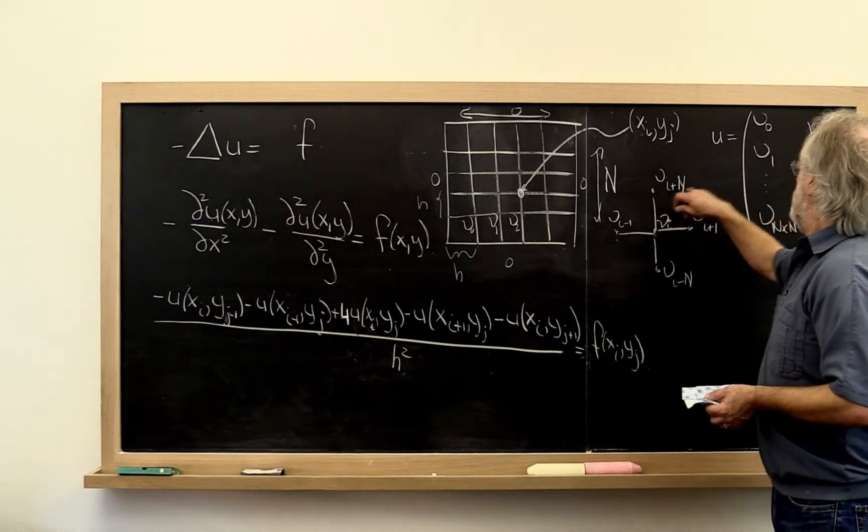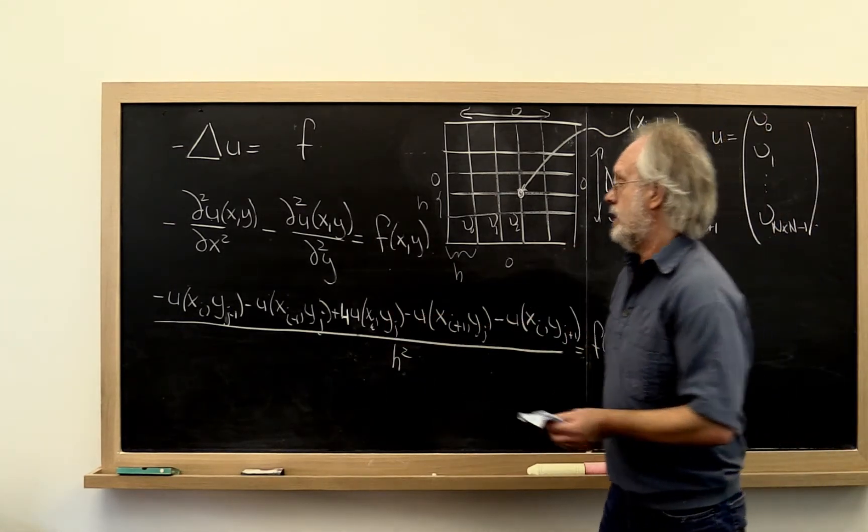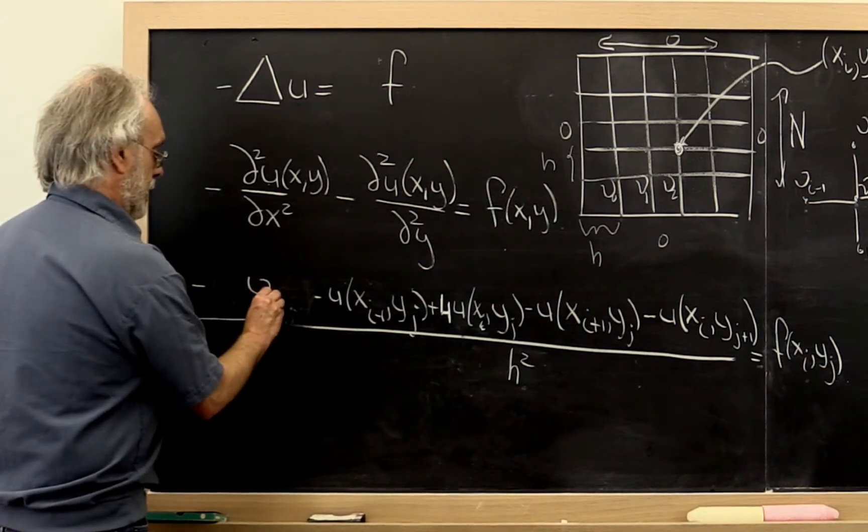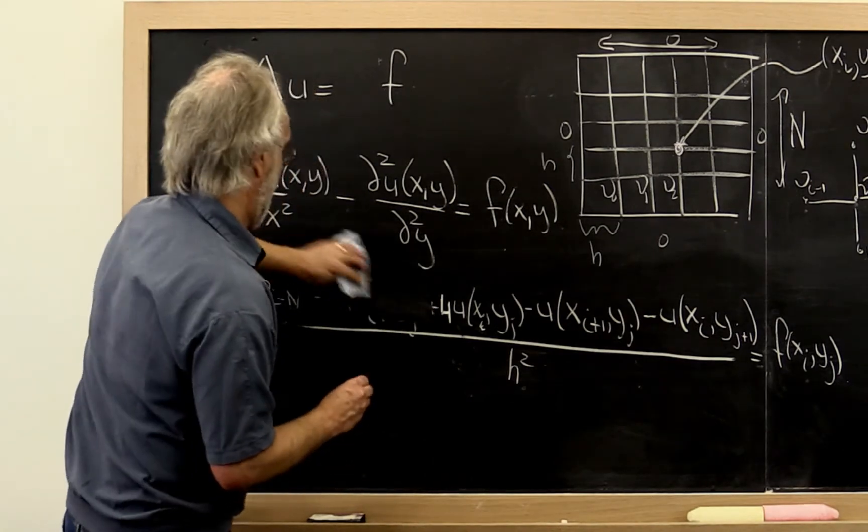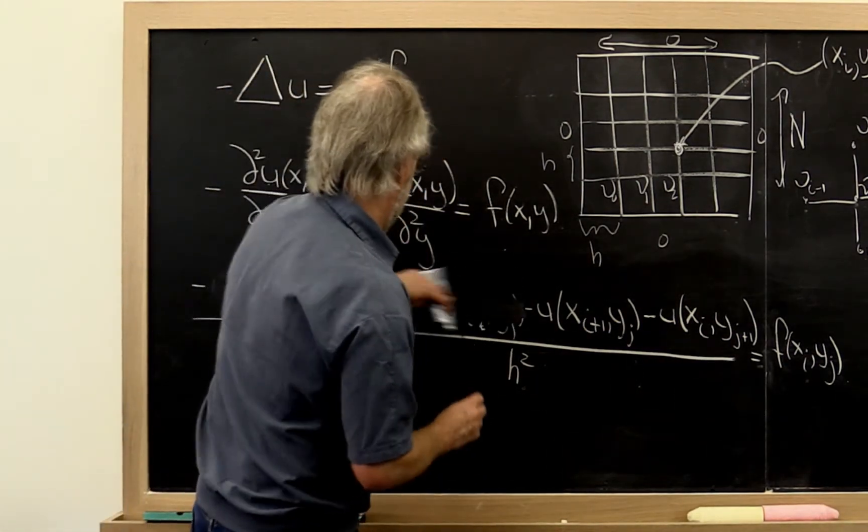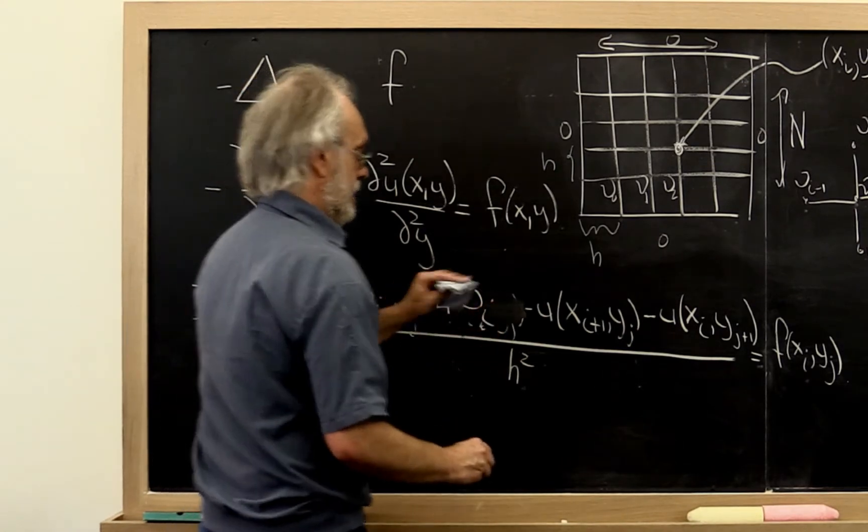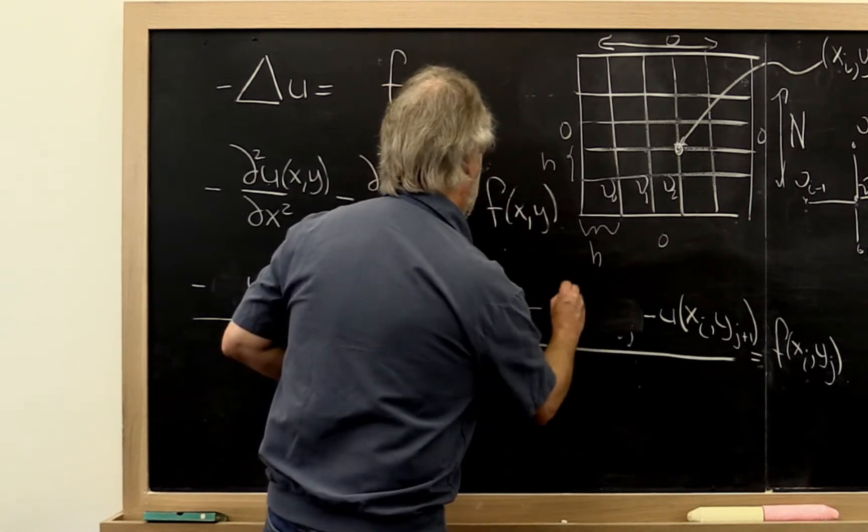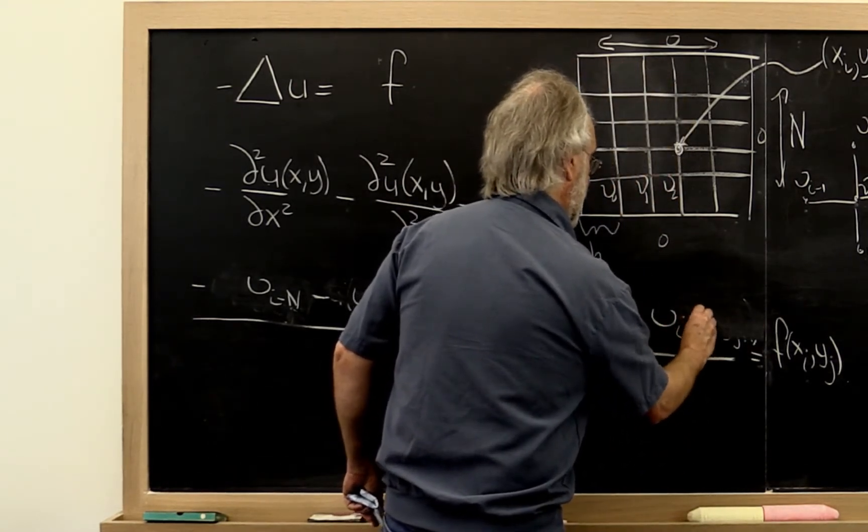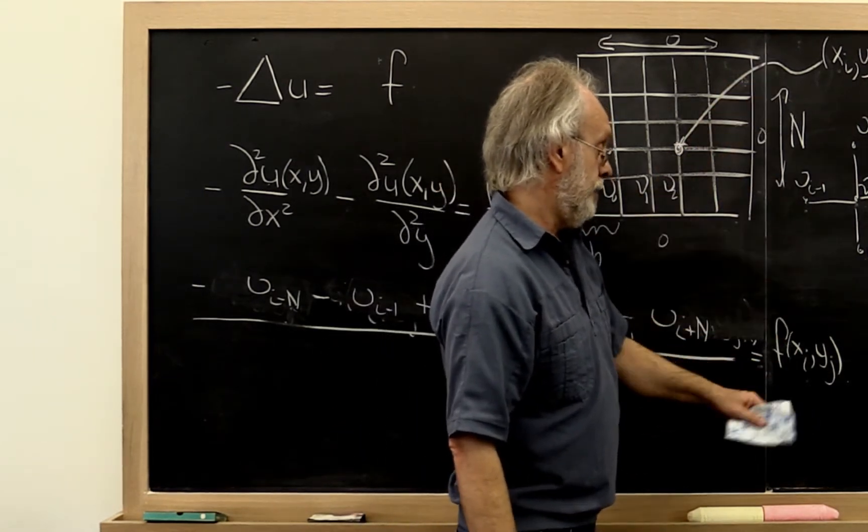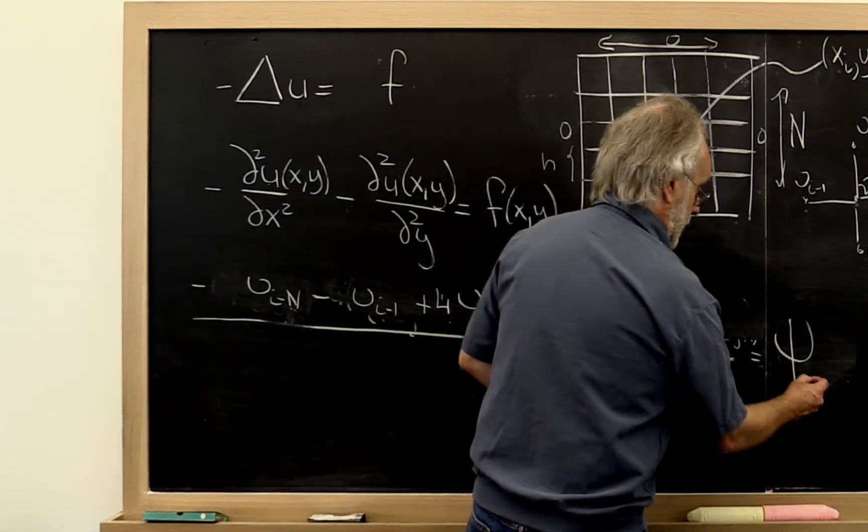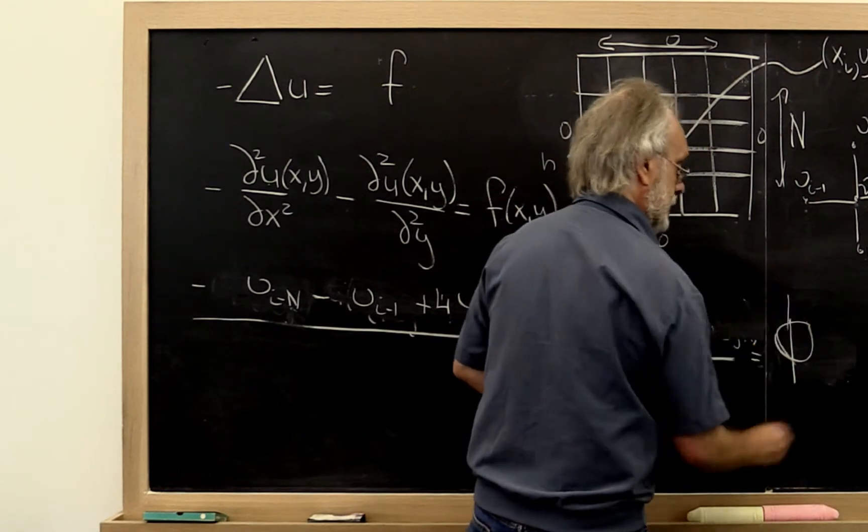All right. So once we have renamed things here, we can look at this equation right here and say, oh, this is really epsilon i minus capital N, epsilon i minus 1. There's a minus sign here. Then we get a plus 4 times epsilon i minus epsilon i plus 1. And finally minus epsilon i plus n. And then this right here becomes a vector as well. Let's call that vector f. And let's say that the value at the ij point is given by phi of i.